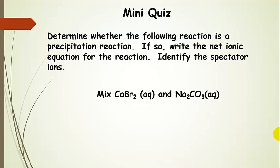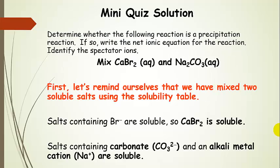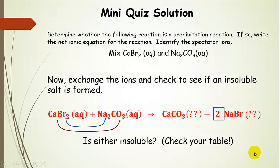Here's a quiz: mix these two soluble salts, figure out if a precipitate forms, and if so, write the net ionic equation and identify the spectators. First, let's confirm we have mixed two soluble salts using the solubility table. Salts containing bromide are soluble, so calcium bromide is soluble. Salts containing carbonate and an alkali metal cation — group one, that's sodium — are soluble, so sodium carbonate is also soluble. So we have indeed mixed two soluble salts.